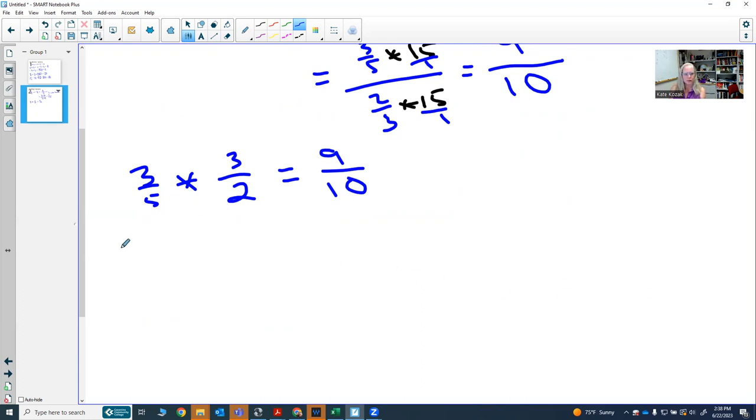And again, you can always go and do it the other way. But let's take 15 sixteenths and divide that by nine over two.